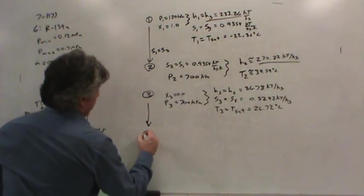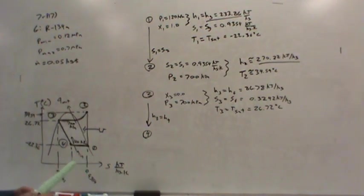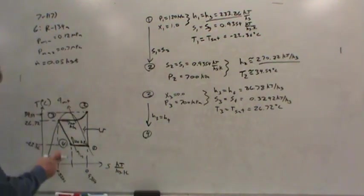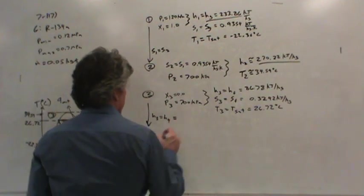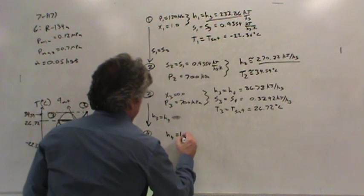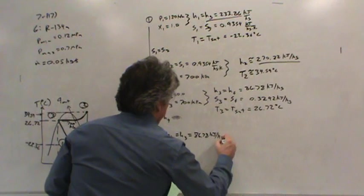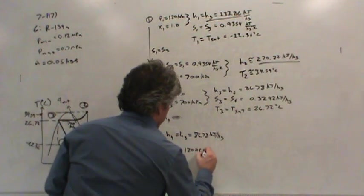The key in going from state three to state four is that the enthalpies are the same. You might say, let's stop there because all I really care about is the enthalpy, and it's the same as state three. But I'd like to finish my diagram. I'd like to know the quality at state four and put an entropy there. For state four, the enthalpy equals 86.78 kilojoules per kilogram, and the pressure is 120 kilopascals.